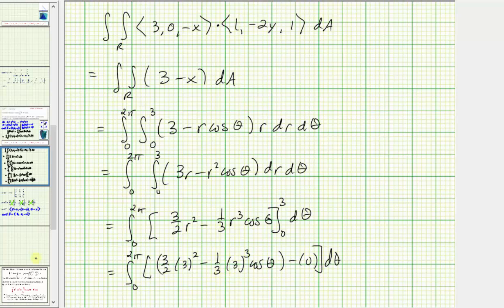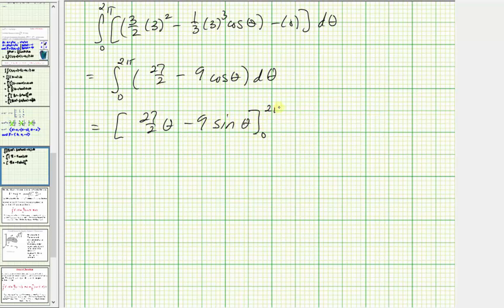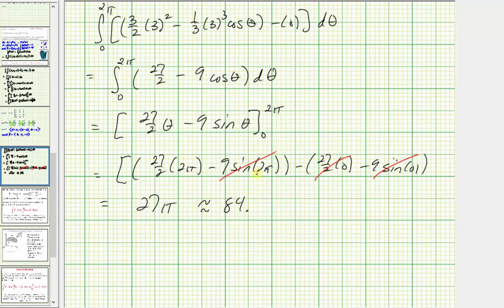Continuing, we integrate 27/2 minus 9 cosine theta with respect to theta from 0 to 2pi. The antiderivative is 27/2 times theta minus 9 sine theta. When theta equals 2pi, we get 27/2 times 2pi minus 9 sine(2pi) equals 27pi minus 0 equals 27pi. When theta equals 0, we get 0 minus 0 equals 0. So the exact value of the line integral is 27pi, which is approximately 84.8230.